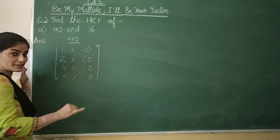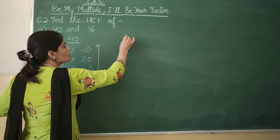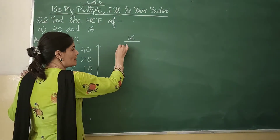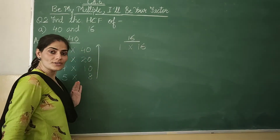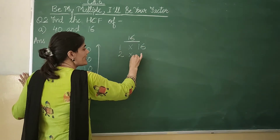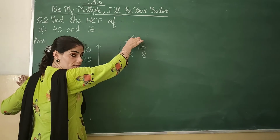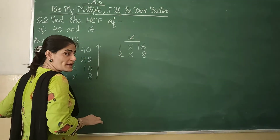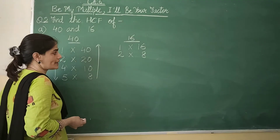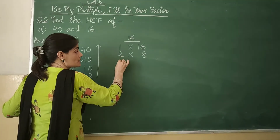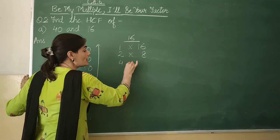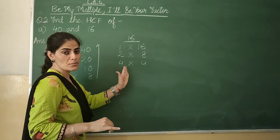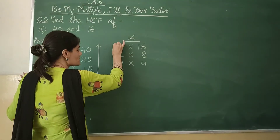Now we will find the factors of 16. We begin with 1 — 1 into 16 gives you 16. 2 into 8 gives you 16; as it is an even number, 2 will surely be its factor. For 3: 1 plus 6 is 7, which is not divisible by 3, so 16 is also not divisible by 3. Next is 4 — 4 into 4 gives you 16. We see the same numbers being multiplied with each other, so we stop writing the factors.